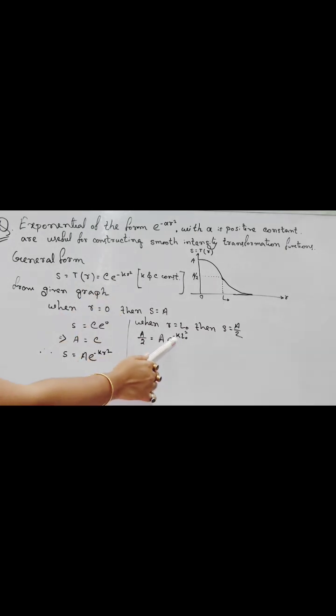Next, e to the power minus K R square. Here, R equals to L0, so that's why L0 square. In this case, S equals to A by 2. That's why we put A by 2.